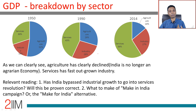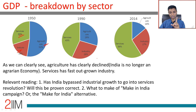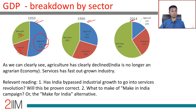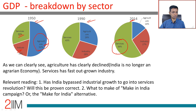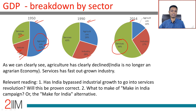GDP is broken down broadly into three sectors: agriculture, industry, and services. Have a look at this snapshot — it gives a breakdown for 1950, 1990, and 2014 for India's GDP. In 1950, India was a predominantly agrarian economy at 52%. By 2014, it is predominantly a services economy at nearly 60% services. Industry has grown but is now more or less flat, and agriculture has shrunk dramatically.